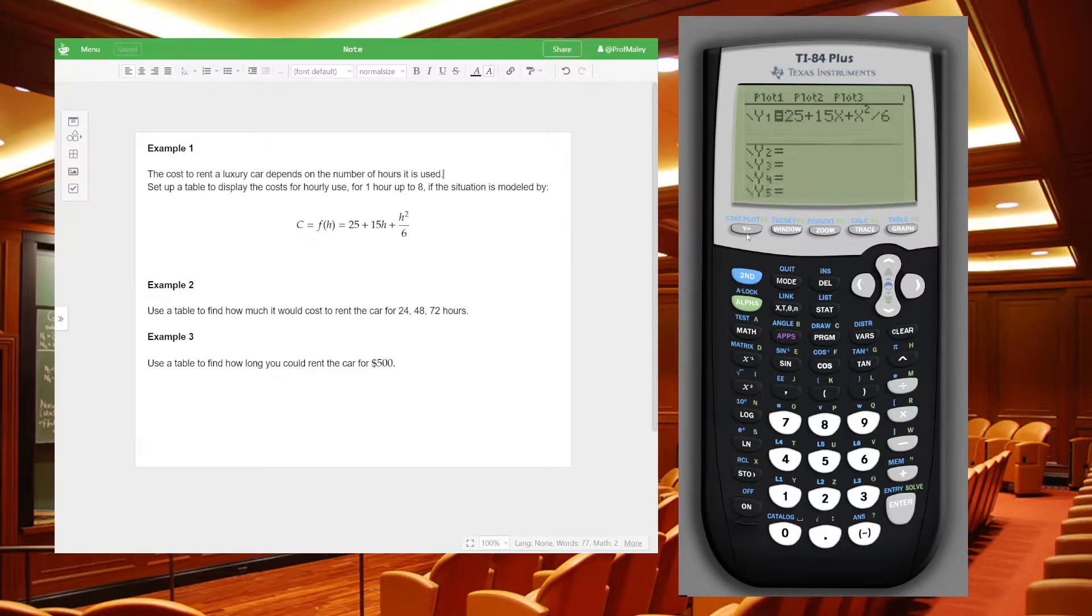So what we do is we start off by plugging this into our Y1 using X for input. So enter this in here. And then before we go jumping to the table, you're going to want to use the table set functions. That's second window to get to table set. And so I'm going to explain what each of the three of these things mean. So table start means where are we starting the table's values?